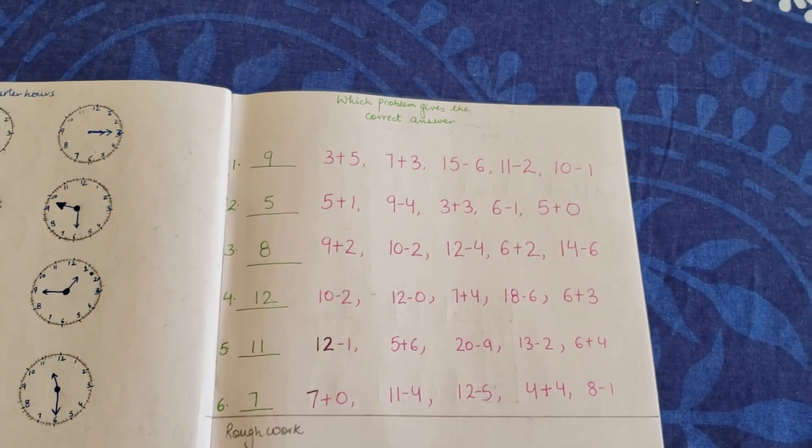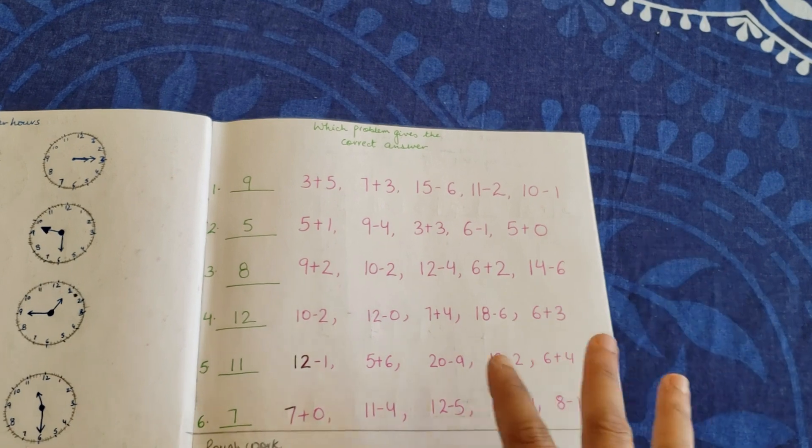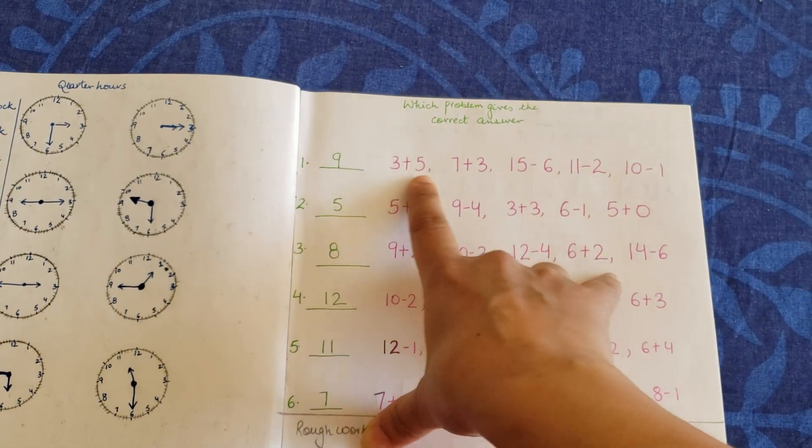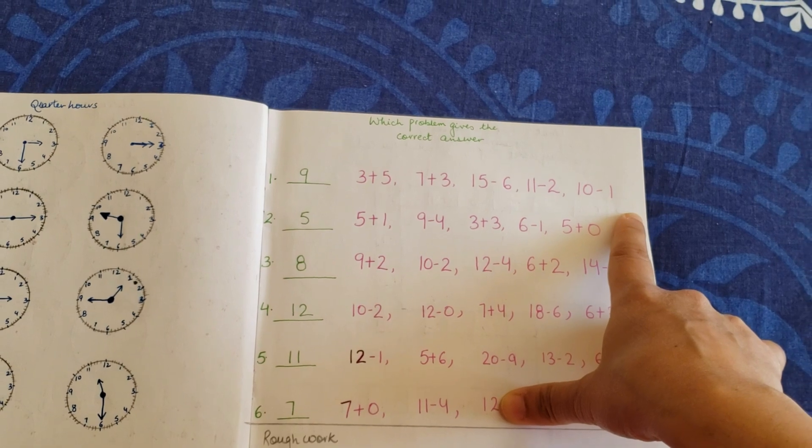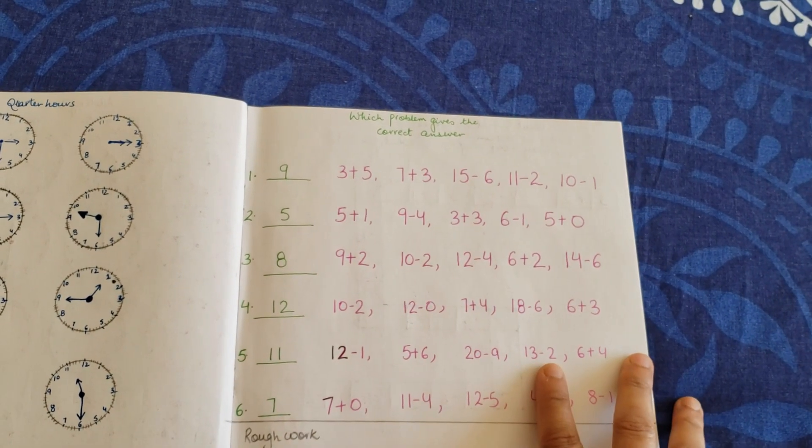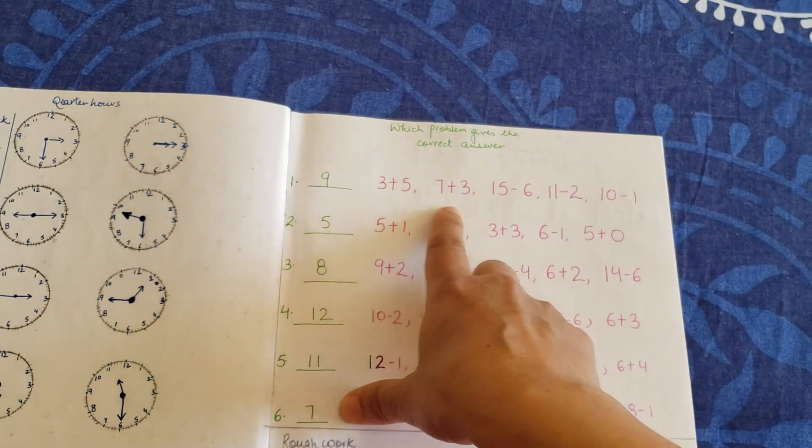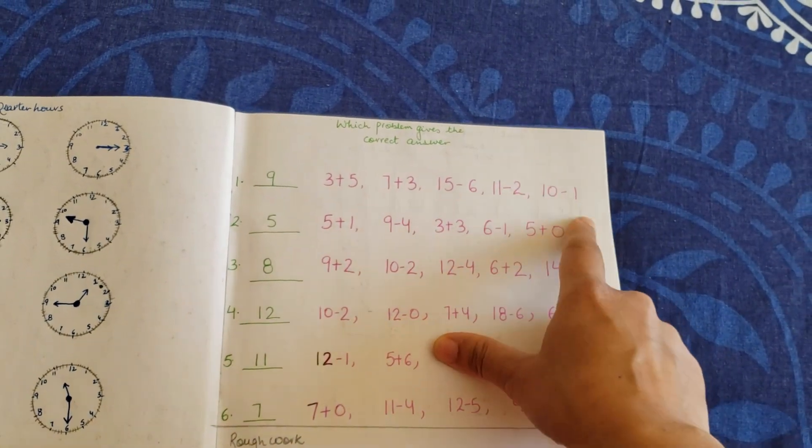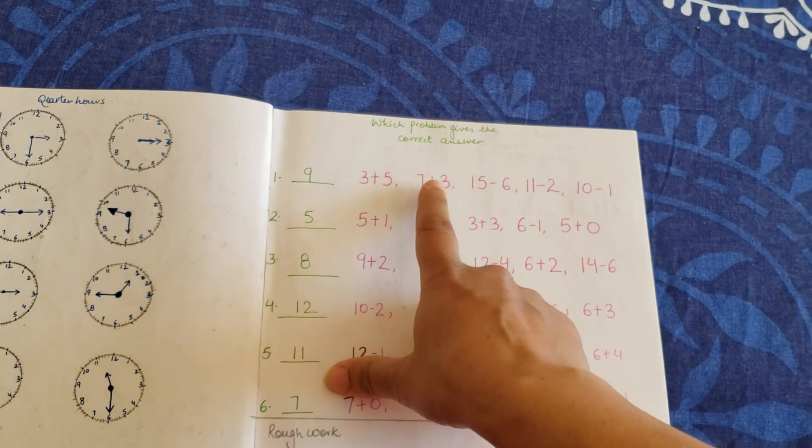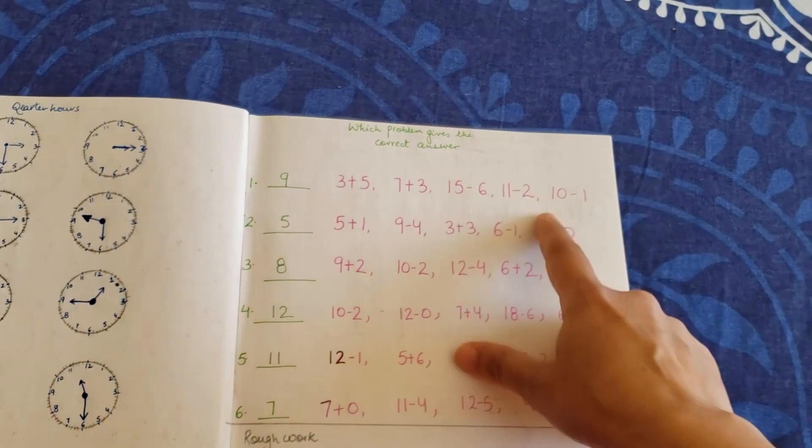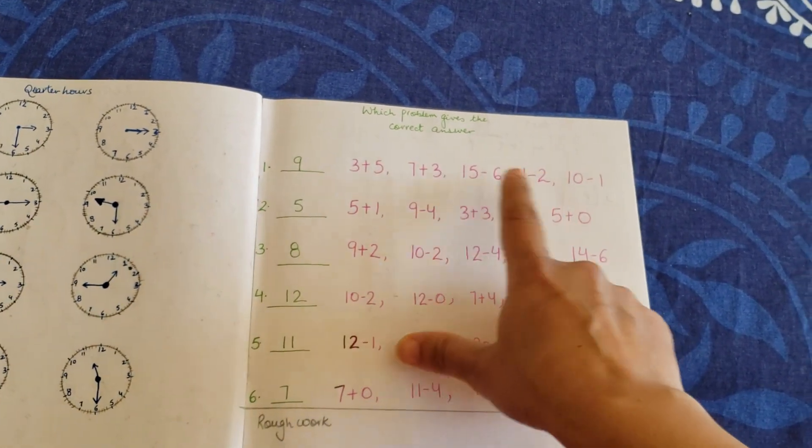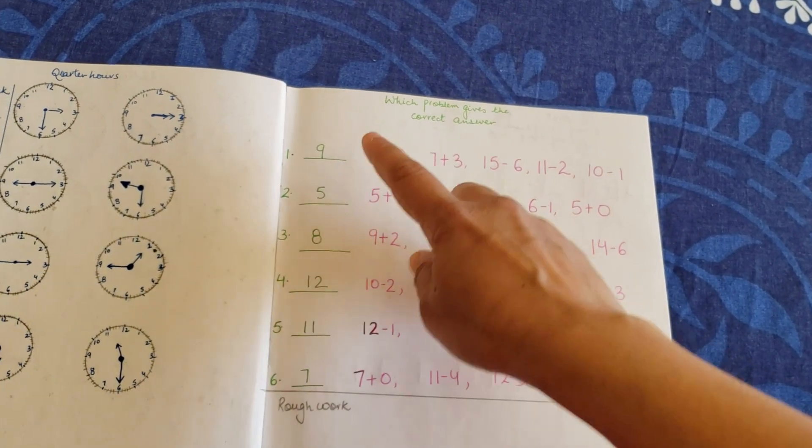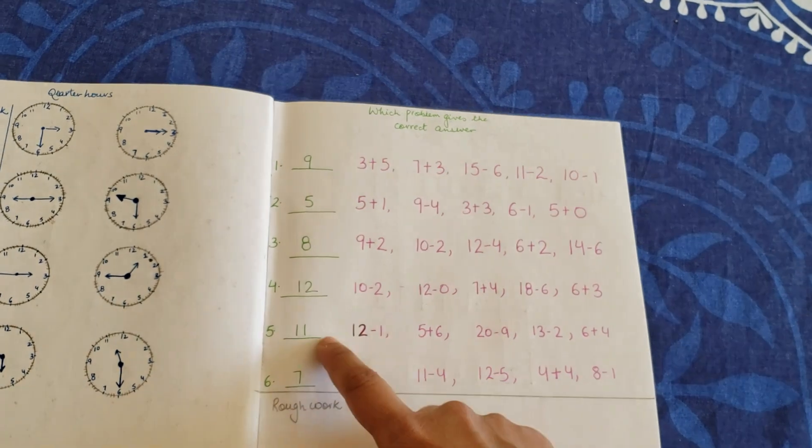Which problem gives the correct answer? Here you have subtraction. I've written the number here, nine, and I've given him a lot of solutions. There could be addition also in between. He needs to find the right answer by circling it. So it says 10 minus one is nine, right? So he needs to circle that. Five, six, seven, eight, no. Seven, eight, nine, ten, no. Eleven minus two, so he needs to circle the right one. Then that's going to be the right answer. So it's nine, nine, five, eight, twelve, eleven, seven.